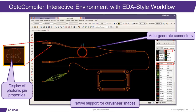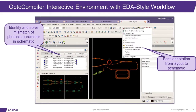Layout connectivity is automatically maintained, including the automatic generation of curvilinear connectors that minimize losses. This permits the designer to take advantage of automatic synthesis of a variety of photonic functionality, such as lattice filters, saving time. Error checking and back annotation of physical layout parameters to the schematic provide the ability to simulate the circuit with physical waveguide parameters.